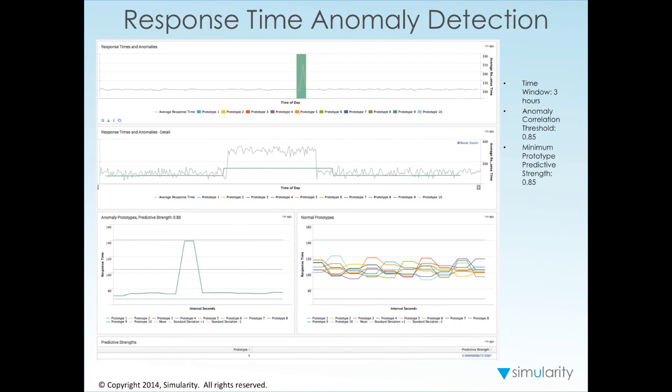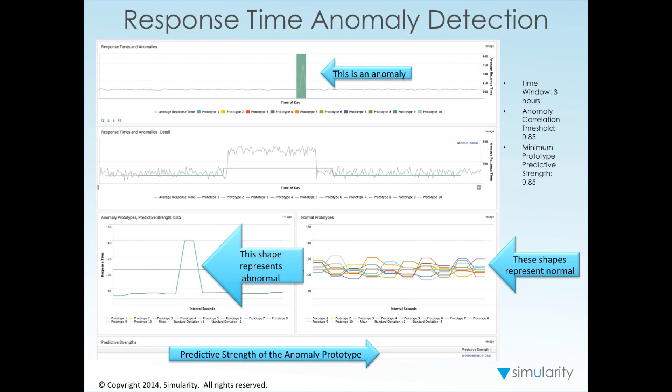You can also use event series predictive archetypes for anomaly detection. Here's an example of an anomaly detection demo that we did, and here is an anomaly that we highlighted. We developed event signatures for all the normal patterns - in this case we're measuring response times - and we also have an event signature for an abnormal pattern. Here we indicate the predictive strength of this anomaly event signature.